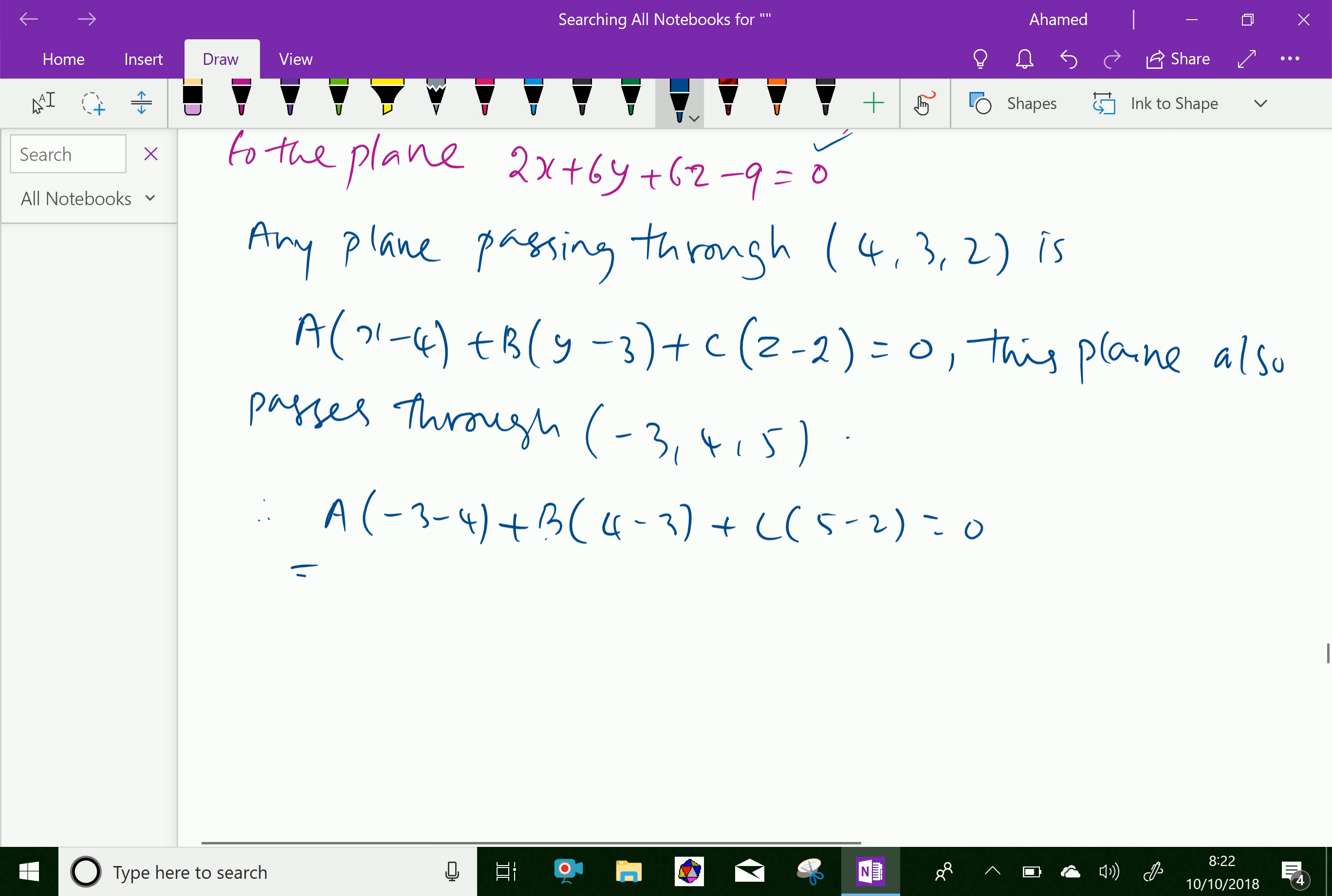We can simplify this: -7A + B + 3C = 0. Let it be equation (1).